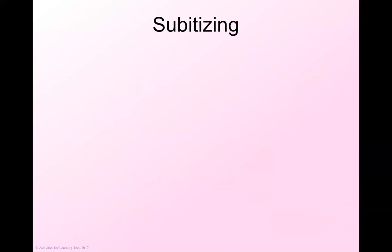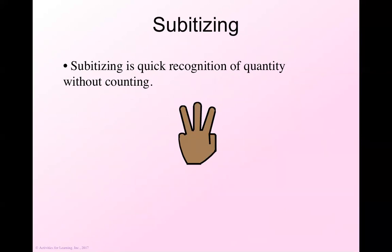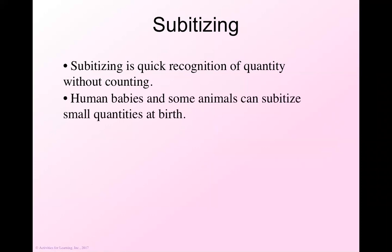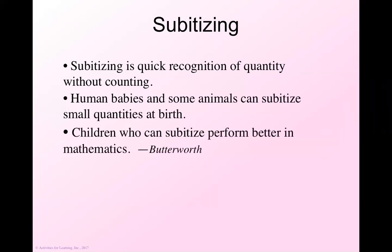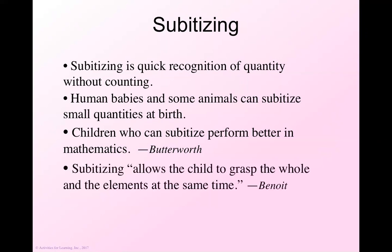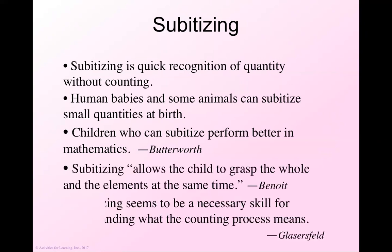So what do we do? Subitizing. What on earth is that? Subitizing is just a fancy word for the quick recognition of a quantity without counting. So how many fingers do I have? Three, right? And none of you had to count. We can do this from very young ages. It's something we're just born with that we can actually do up to five. Children who subitize, it's been found that if you can recognize quantities and understand the quantities, you're going to perform better in math.